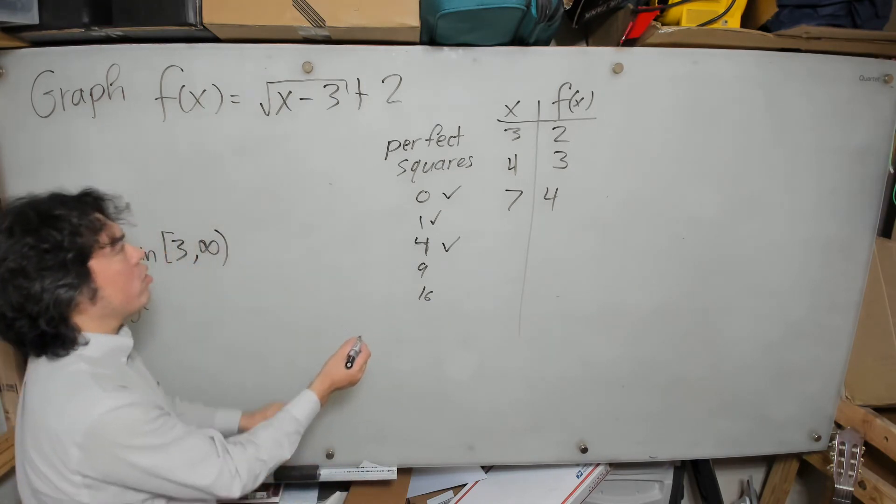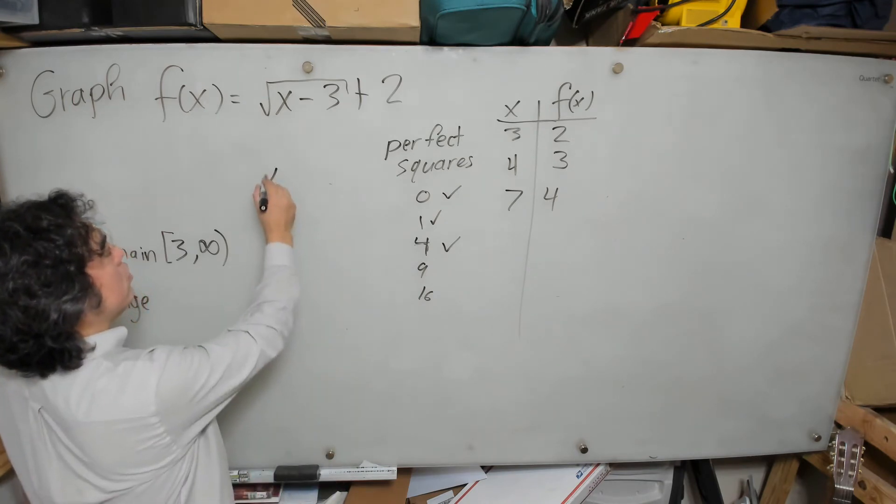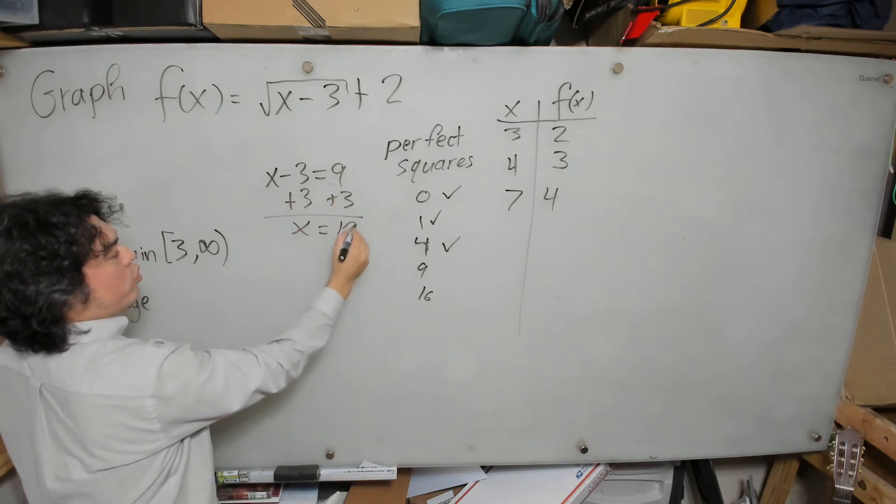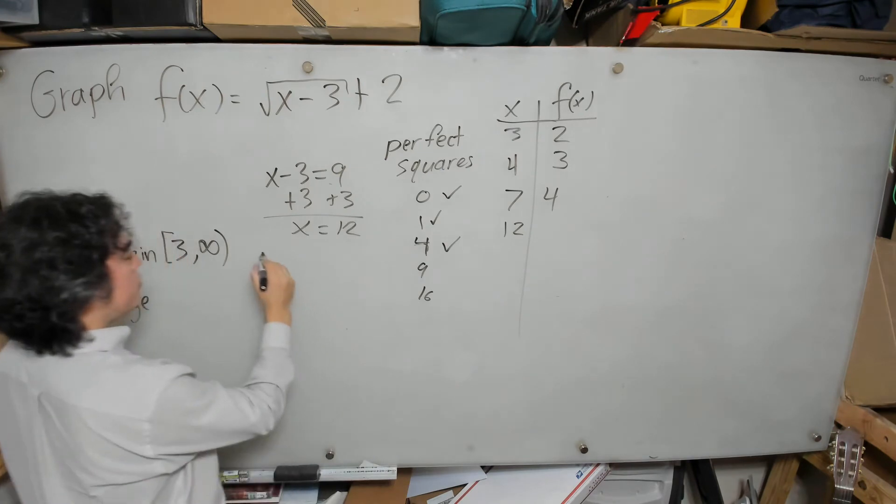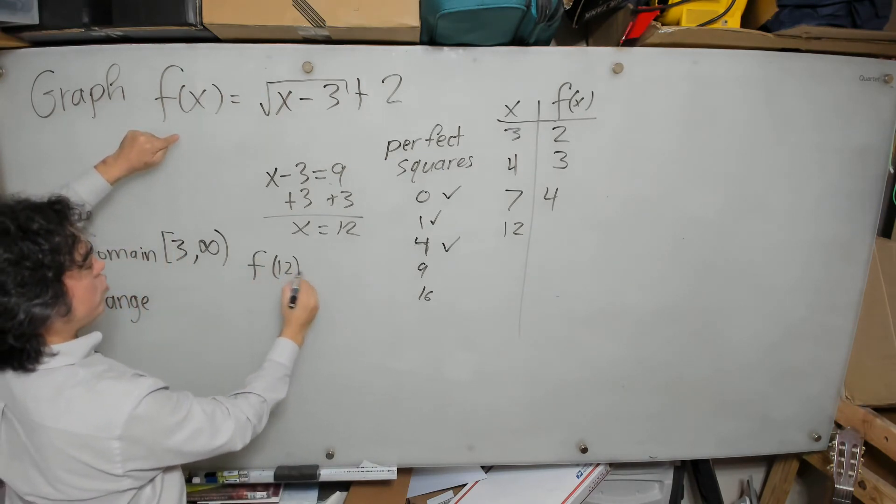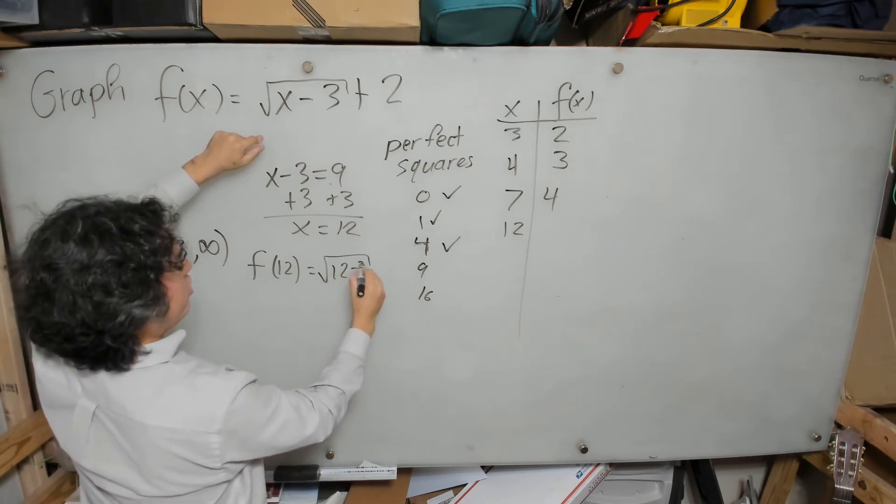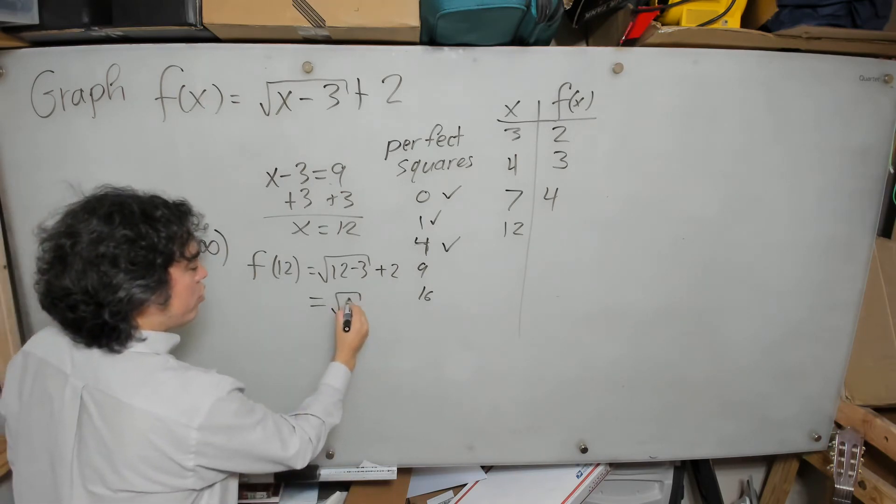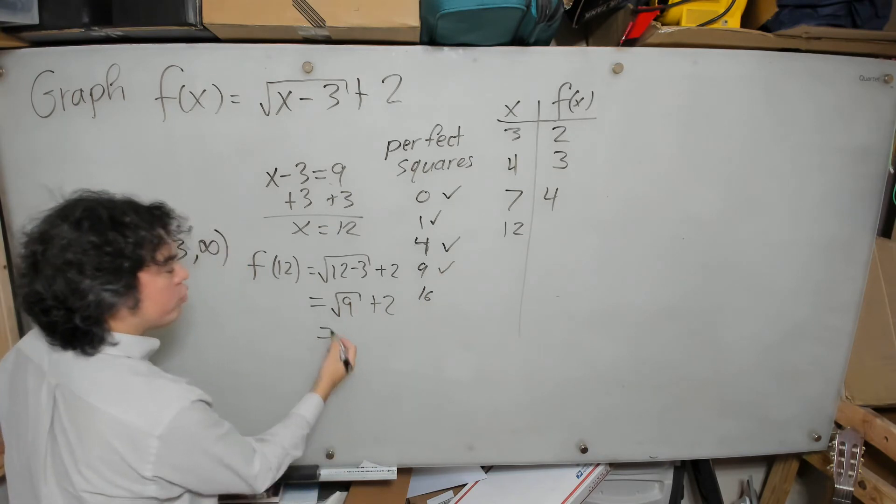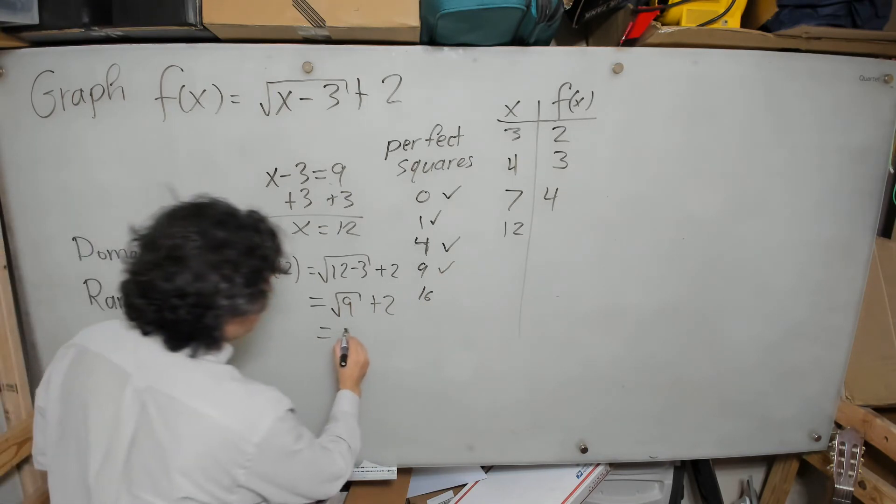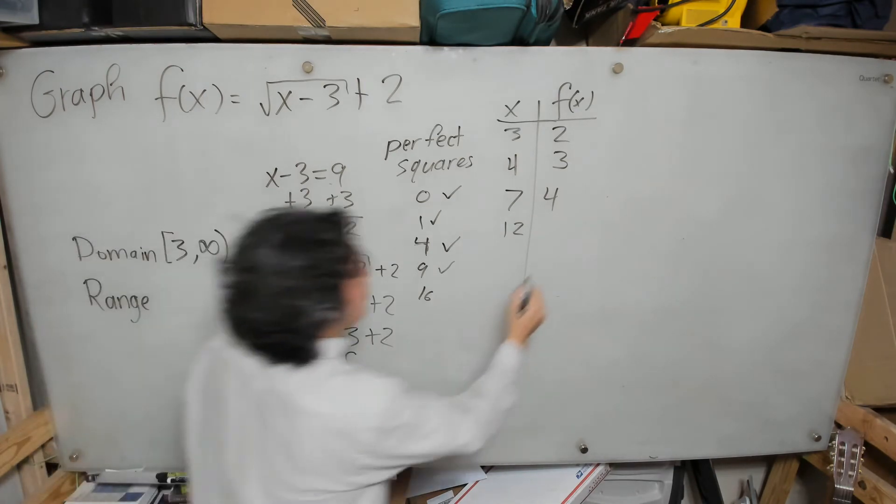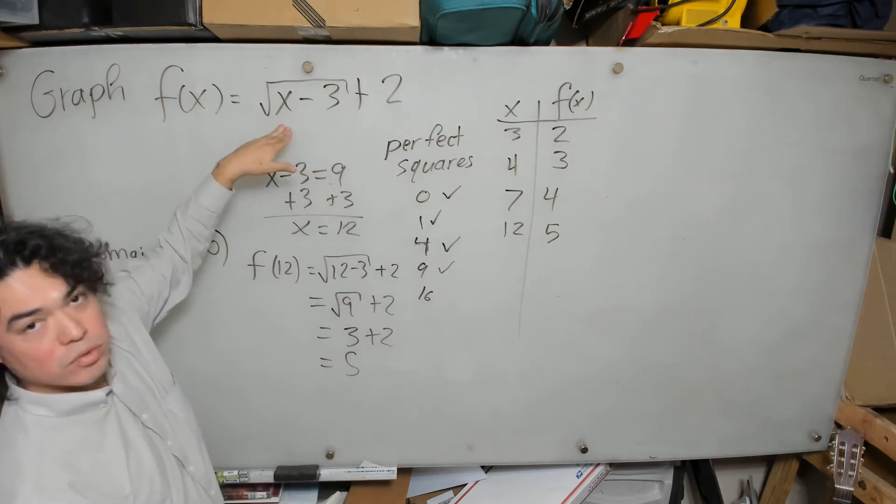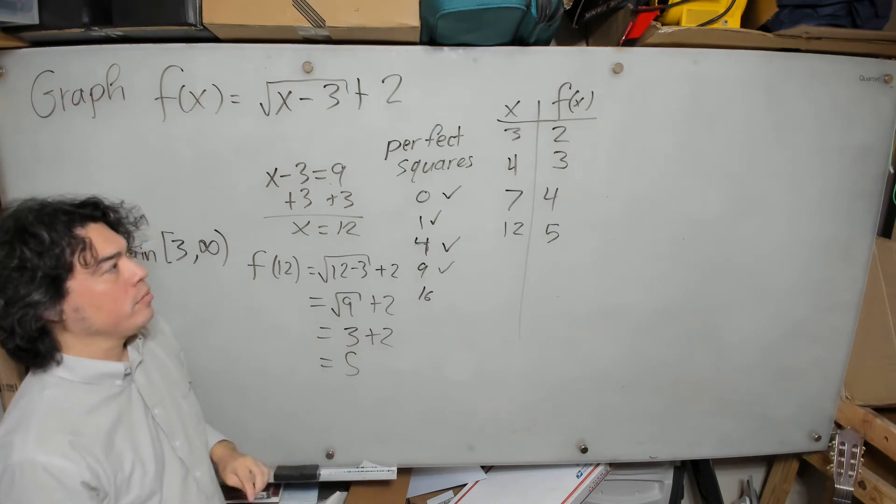Now, as you already are aware, we're going to ask ourselves, what will make the inside equal to 9? So I'm going to find out, add 3, add 3, x equals 12. Now I'm going to calculate my function at 12. That'll be the square root of 12 minus 3 plus 2. By design, this is going to be the square root of 9 plus 2. So we're using this one. The square root of 9 is 3. Why? Because 3 times 3 is 9. Plus 2 equals 5. Now let's stop right here because you can see if you use 16, if we want to make this equal to 16, it's going to be 19. And it's going to be hard to graph on a graph paper.